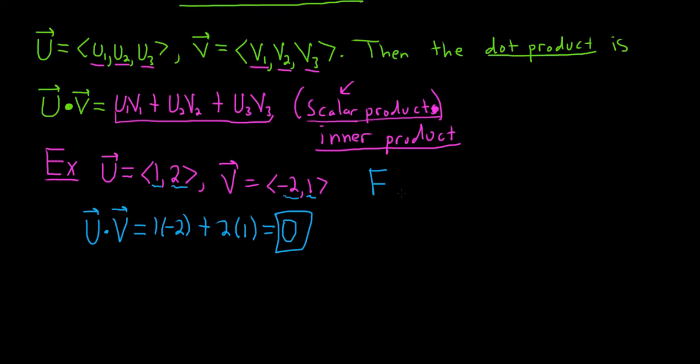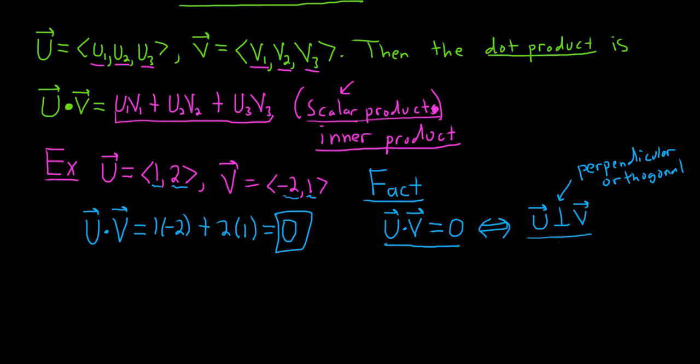So this leads us to an important fact. Whenever you have that the dot product of two vectors is equal to 0, this implies that the vectors are perpendicular. So u is perpendicular to v. This gave me an opportunity to use this symbol here. This symbol means perpendicular. It also means orthogonal. So orthogonal is another word for perpendicular. So two vectors are perpendicular if their dot product is 0. So it goes the other way as well. So it's an if and only if statement. If the dot product is 0, the vectors are orthogonal. If the vectors are orthogonal, the dot product is 0.